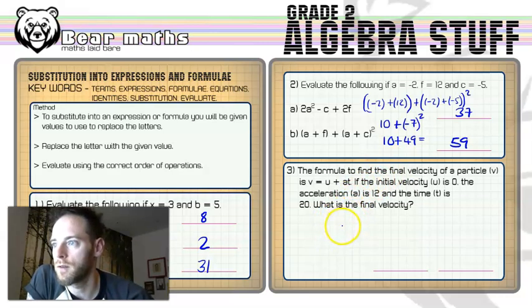Now, the formula to find the final velocity of a particle, V. So the final velocity is represented by the letter V. Is V equals U plus AT. Now that is a genuine formula that they do like you to be able to substitute into these days.